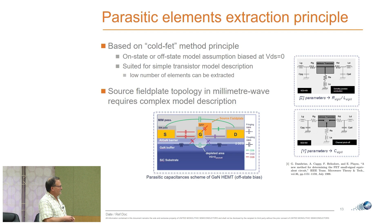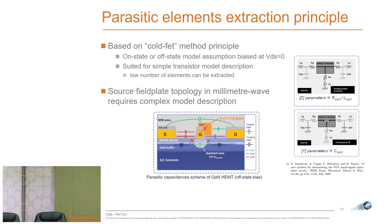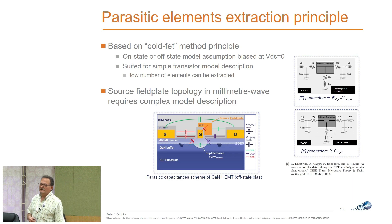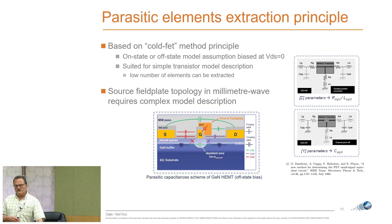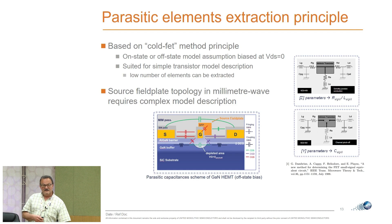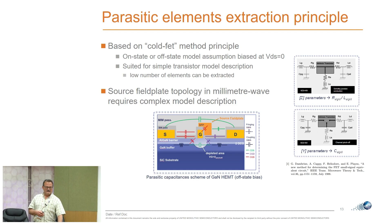The field plate on top of the gate introduces additional parasitics that must be taken into account, because these additional parasitics will significantly reduce the cutoff frequency of the transistor.